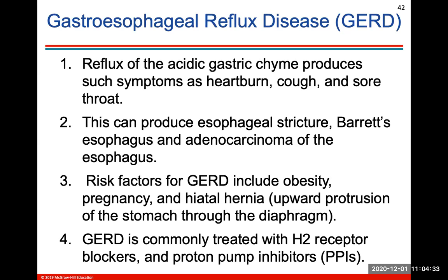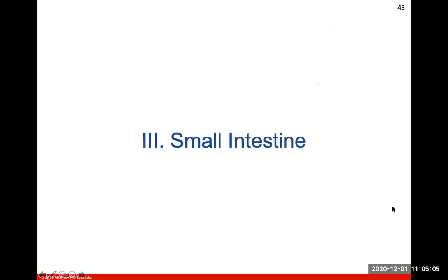GERD is gastroesophageal reflux disorder. It occurs when acidic gastric chyme refluxes back up the esophagus, producing heartburn, cough, and sore throat. This can produce an esophageal stricture, Barrett's esophagus, or even cancer of the esophagus. Risk factors include obesity, pregnancy, and hiatal hernia, which is an upward protrusion of the stomach through the diaphragm. It's also treated by hydrogen receptor blockers and proton pump inhibitors.